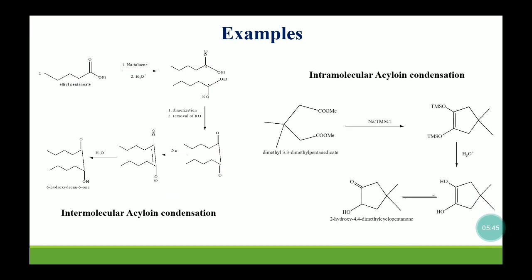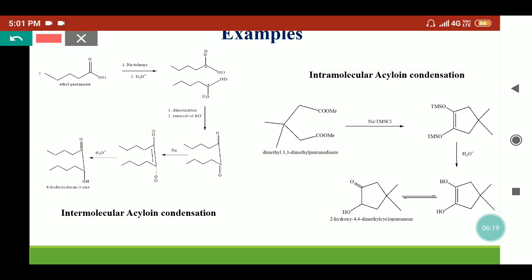In the next example we have taken an intramolecular acyloin condensation, where dimethyl 3,3-dimethylpentanedioate, which is a diester molecule, reacts in presence of sodium. The intramolecular reaction takes place and similarly we get the enediolate. In presence of chlorotrimethylsilane, this enediolate is trapped and converts into the silyl ether, which can be hydrolyzed easily. The O-H groups on keto-enol tautomerism produce the acyloin as the major product.